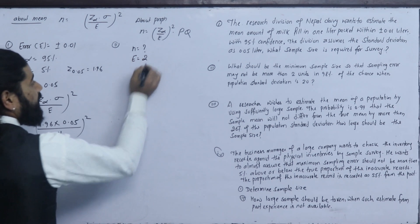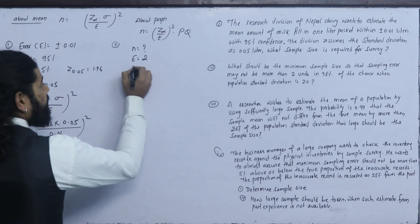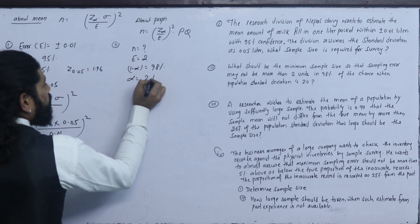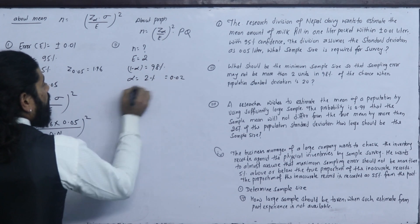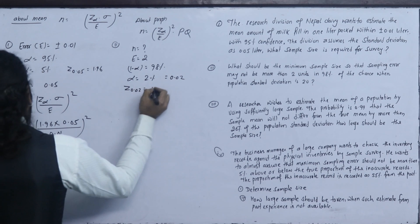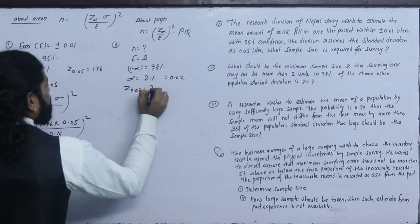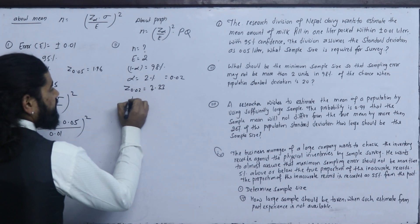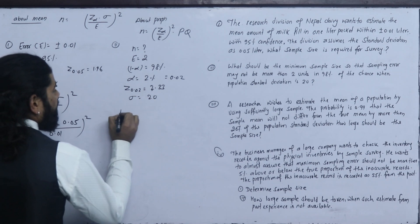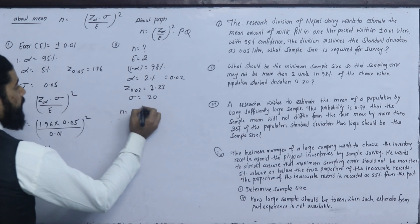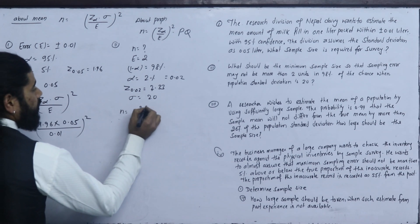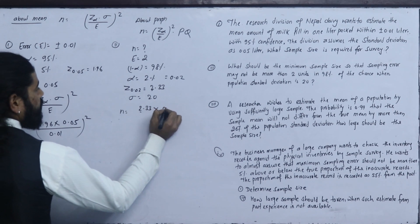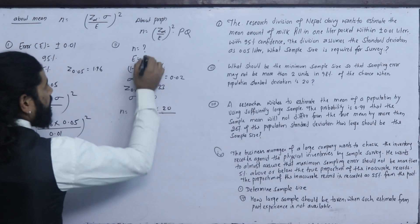In this case, the confidence level is 98%, so 1-alpha = 0.98, alpha = 0.02. Z for alpha = 0.02 is 2.33. The population standard deviation is 20. Using n = (z-alpha × σ / e)² = (2.33 × 20 / 2)².